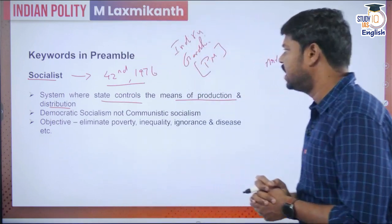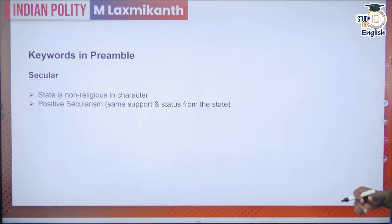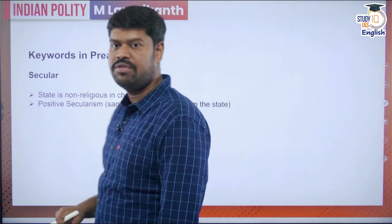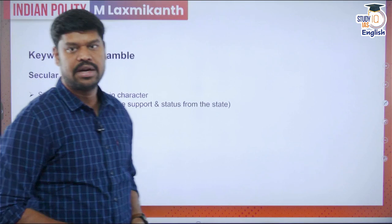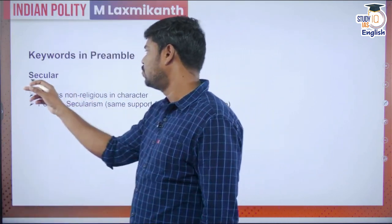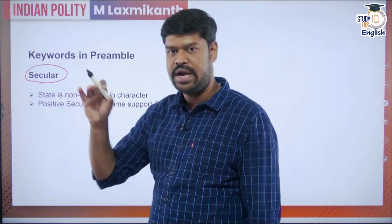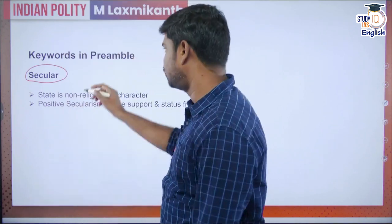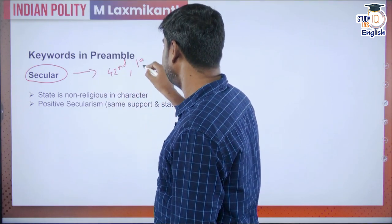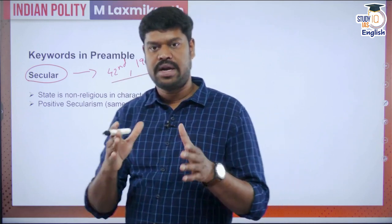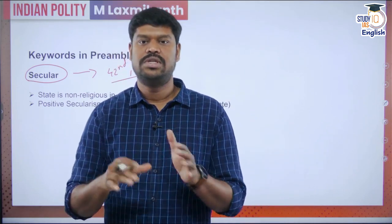Now we move to the next keyword: 'secular.' Similar to the word 'socialist,' the word 'secular' was also inserted into the constitution by the 42nd Constitutional Amendment Act in 1976. This is often asked as a question: which words were inserted into the preamble by the 42nd Constitutional Amendment Act? We have seen 'socialist,' and 'secular' was also added by the 42nd Constitutional Amendment Act 1976, inserted by Prime Minister Indira Gandhi.